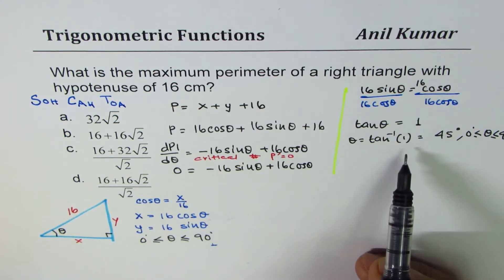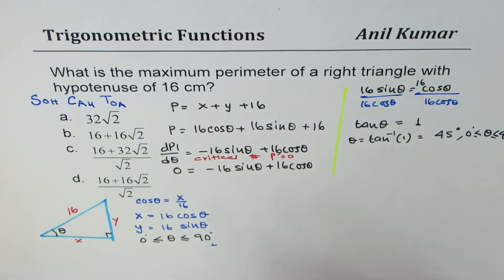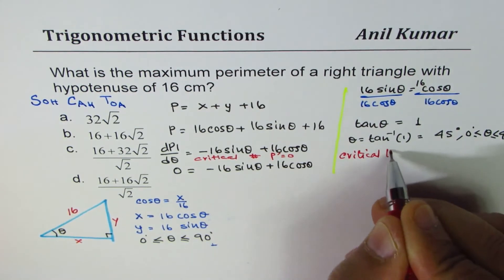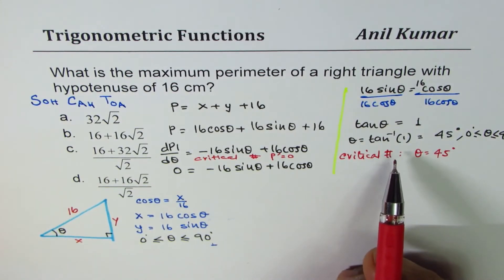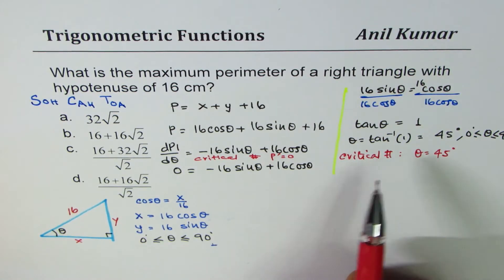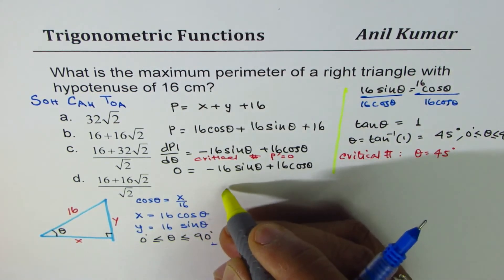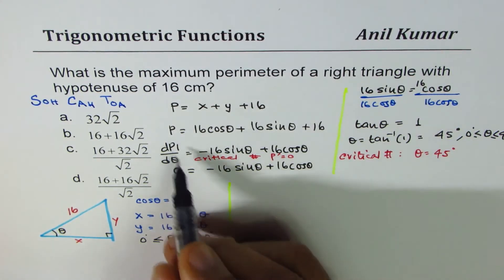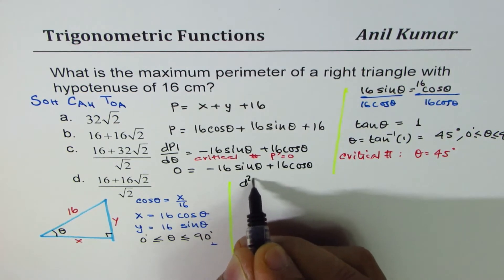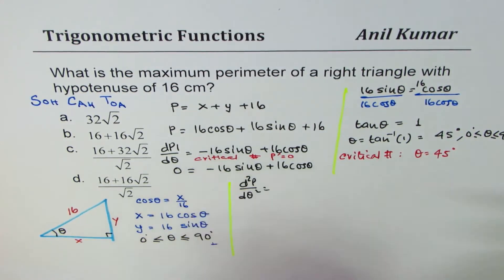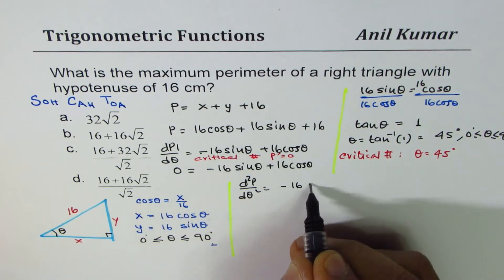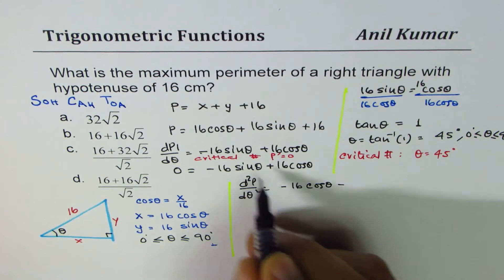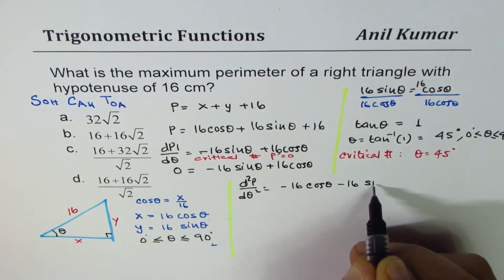Now how do we know that this is really a maximum? We have a critical number, which is theta equals 45 degrees. We could analyze the first derivative or we could find the second derivative. Let's find the second derivative: d2p over d theta square. Derivative of sin theta is cos theta, derivative of cos theta is minus sin theta.